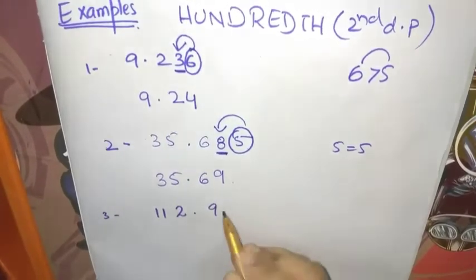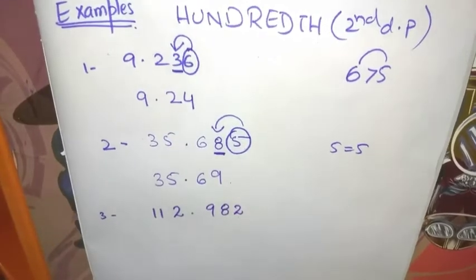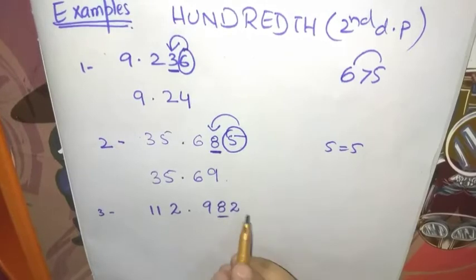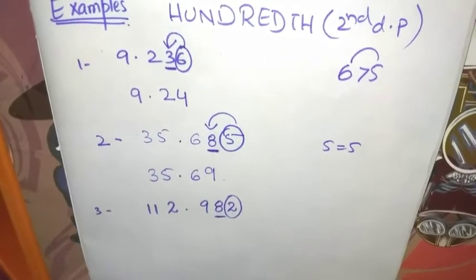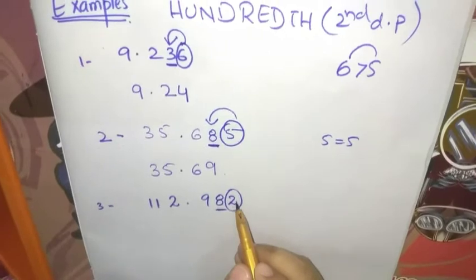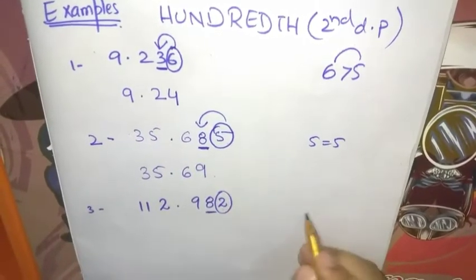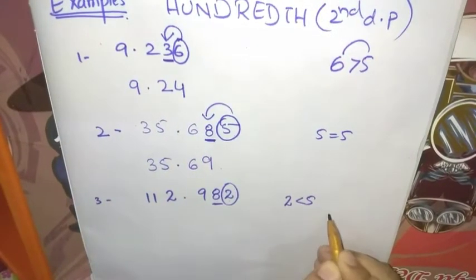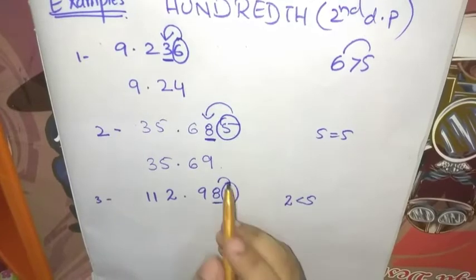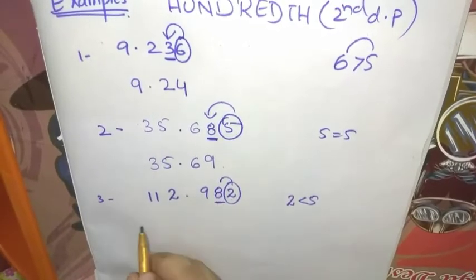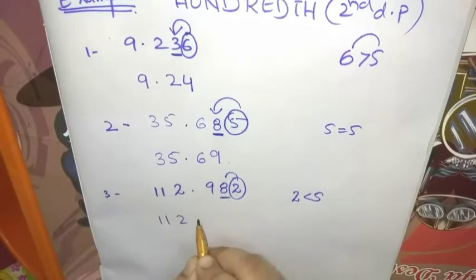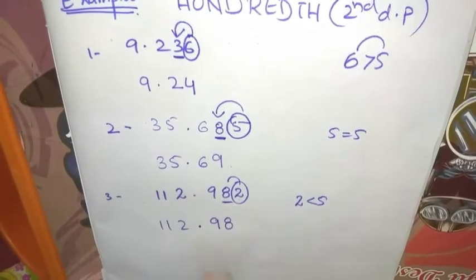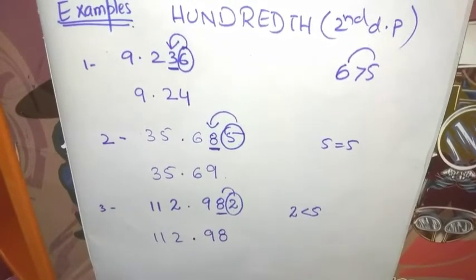The third example is 112.982. We underline this digit and circle the next number. We see this number is less than 5 — the digit 2 is less than 5 — so we will not add 1 to this digit. The number after rounding becomes 112.98. This is the rounding of the number at the second decimal place.